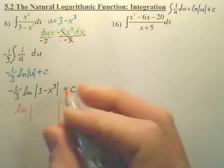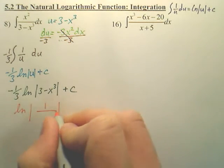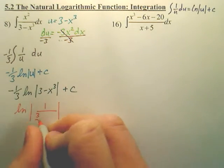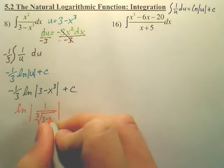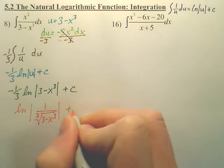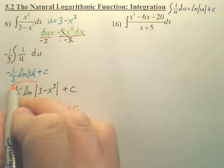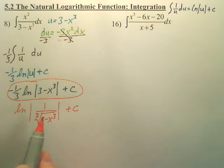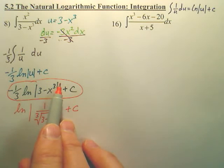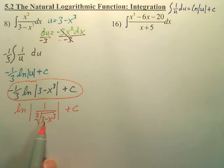you could also write it like this, as, I would choose this one, but this is how you also could write it, because that becomes a cube root negative, so it drops to the bottom. That is another way of writing it.